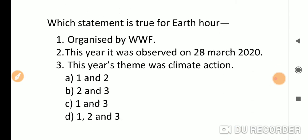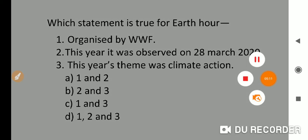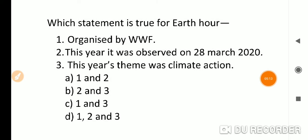Which statement is true about Earth Hour? It is organized by WWF, correct. This year it was observed on 28th March 2020, also correct. This year's theme was climate action. So all statements are correct, answer B. Earth Hour is celebrated on the last Saturday of March, when lights are turned off from 8:30 to 9:30 PM.